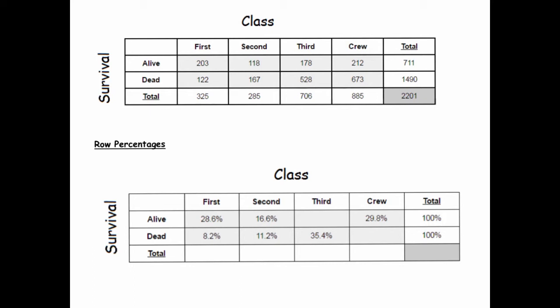In terms of our contingency table, this basically means converting all the values into row percentages. It's called row percentages because we're going to think of our total as being at the ends of each of the rows. The 711 people here are the passengers who survived — I'm going to think of that group as 100%. Then we'll study the 1,490 people as a separate group and see how the distribution of class changes between these two groups.